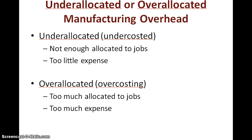Typically you will have a situation where you have under-allocated or over-allocated overhead. In this case, we had over-allocated overhead, which means our jobs were over-costed. Remember, we allocate manufacturing overhead to figure out our total cost of a job. If we over-allocated, we put too much manufacturing overhead into our jobs, meaning we over-costed them — our jobs have too much expense in them.